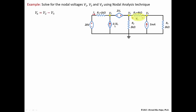We also have another dependent parameter ix, which defines the current source. Looking at the circuit, ix is the current flowing from the 20-volt node to v1. Using Ohm's law, ix equals 20 minus v1 over 1kΩ — that's the voltage across this resistor divided by the resistance of 1kΩ.